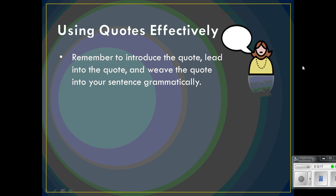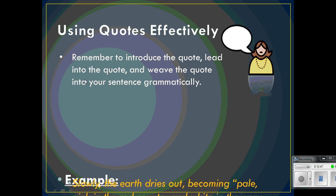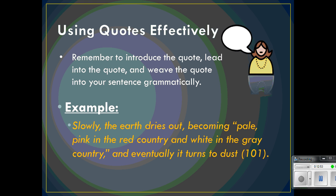Now we're going to stop for a second and look at how we can use quotes effectively. When you use quotes, you need to introduce the quote in some way or make it work effectively with your discussion — lead into it, introduce it — and definitely always weave the quote into your sentence in a grammatically correct fashion. Here's an example from an earlier portion of the PowerPoint where Goggins states: 'Slowly the earth dries out becoming' — and these are Steinbeck's words — 'pale pink in the red country and white in the gray country' — and eventually it turns to dust.